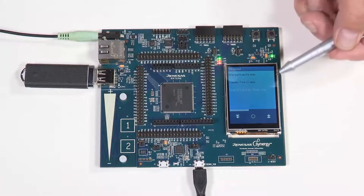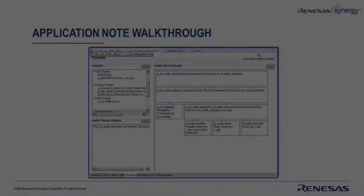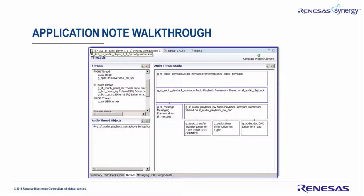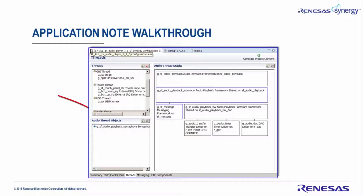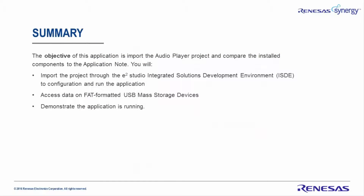We have now verified the project is operating correctly. Now that the project is installed, you can compare the configuration in E-Squared Studio with the application note. You should focus on the source code layout, thread layout, thread initialization, thread resources, inter-thread communication, message processing, audio thread processing, and GUI structure. We imported the project through the E-Squared Studio ISDE, accessed data on the FAT-formatted USB mass storage device, and demonstrated the application is running. That's all for this demonstration — thank you for watching.